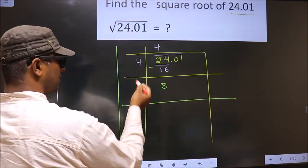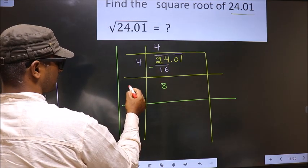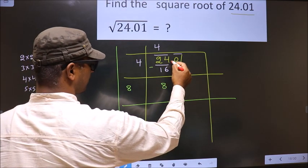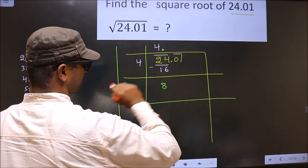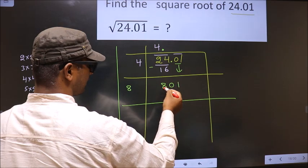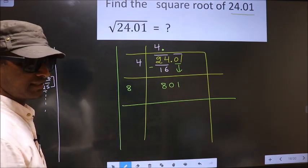Now here we should add these two numbers and write. So 4 plus 4, 8. Now here we have a decimal. So this decimal will go to here and this pair will come down making it 801. Here you will not write the decimal again.